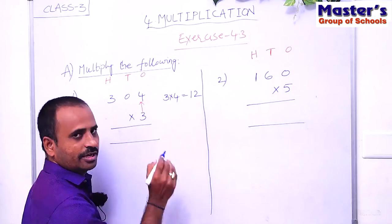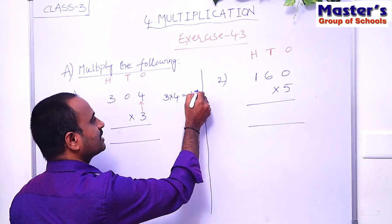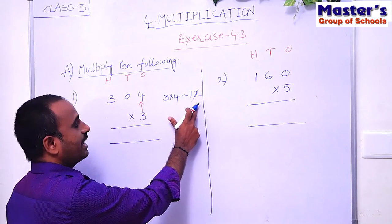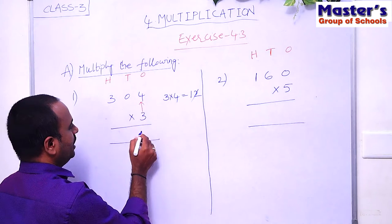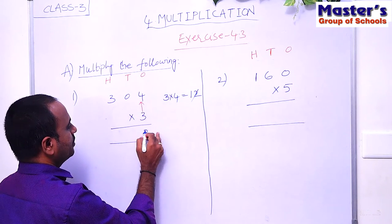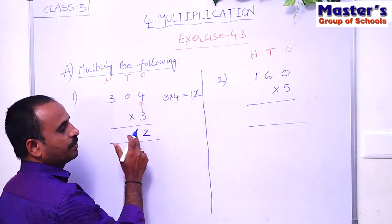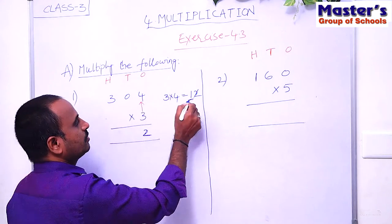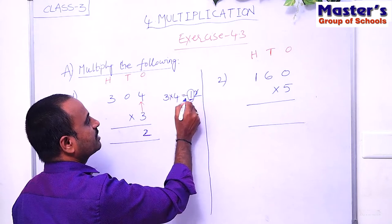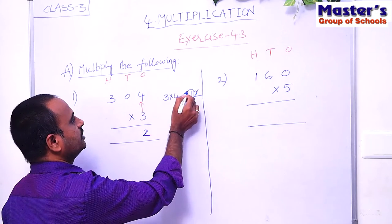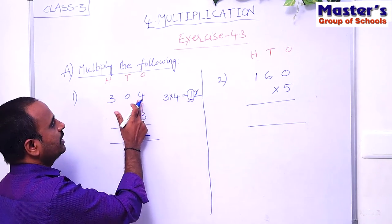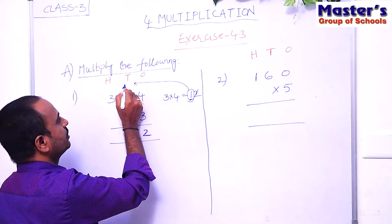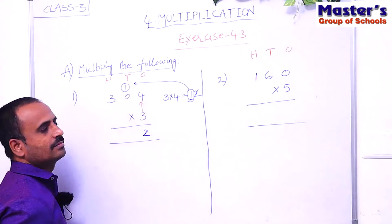If the product is a two-digit number, we do not write the whole number. Write only the second digit under the ones place — that is 2 — and carry the first digit to the next place. The first digit is 1, and the next place after ones is the tens place, so carry the 1 to the tens place.